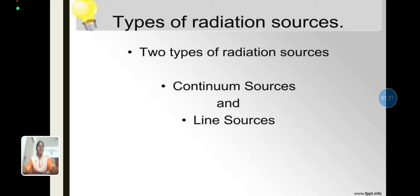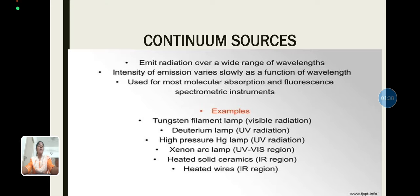The types of radiation sources are continuum sources and line sources. Continuum sources emit radiation over a wide range of wavelengths. Intensity of emission varies slowly as a function of wavelength. They are used for most molecular absorption and fluorescent spectrometric instruments. Examples include tungsten filament lamp, high pressure mercury lamp, xenon arc lamp, deuterium lamp, heated solid ceramics, and heated wires.